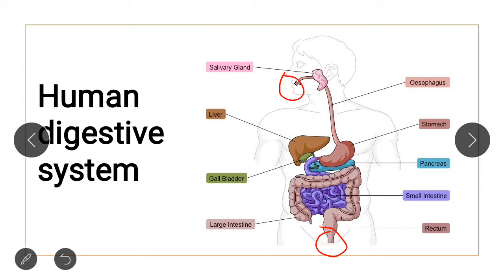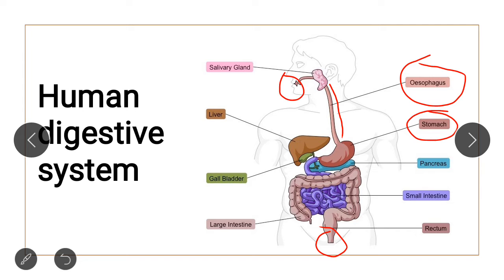The alimentary canal contains organs starting from the mouth to the anus. After the mouth comes the esophagus — a pipe-like structure through which food is transferred from the mouth to the stomach. In the esophagus there is peristaltic movement, which is the rhythmic contraction and relaxation of the esophagus. Food is then transferred to the stomach, where various gastric juices are present and food is further broken down.